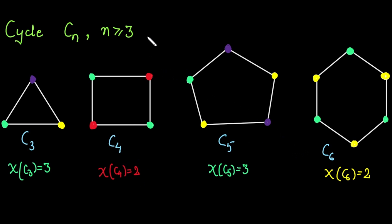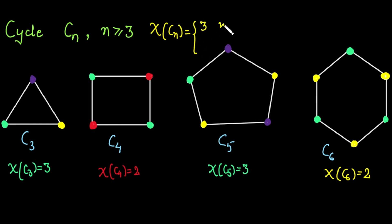In short, the chromatic number of Cn is 3 when n is odd, and 2 when n is even.